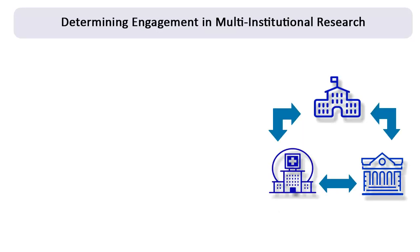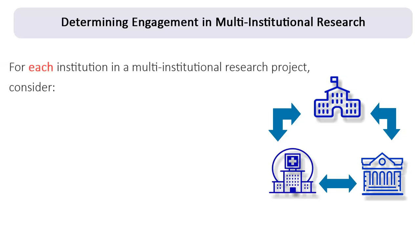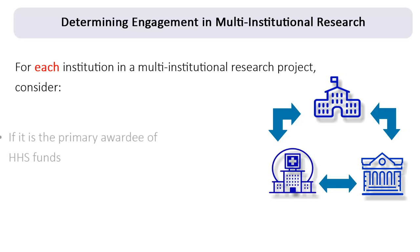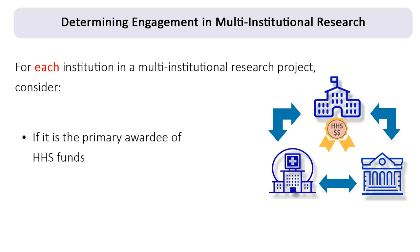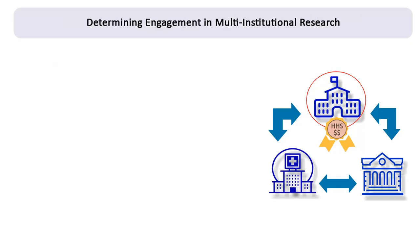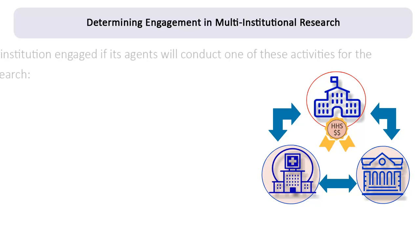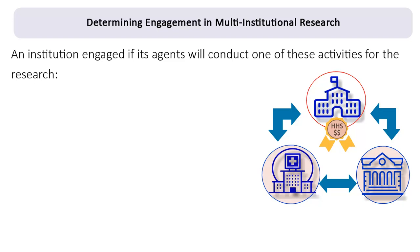When determining which institutions in a multi-institutional research project are considered to be engaged, think about these points for each of the participating institutions. If the institution is the primary awardee of federal funding for the research, then typically it is engaged, regardless of the role its employees or agents play in the research, unless it meets an exception discussed in OHRP's correspondence on non-engaged scenarios. For the other participating institutions that are not the primary awardee, consider the specific activities that its employees or agents are doing. Generally, an institution is engaged if its employees or agents undertake any of the following activities that OHRP considers to constitute human subjects research.